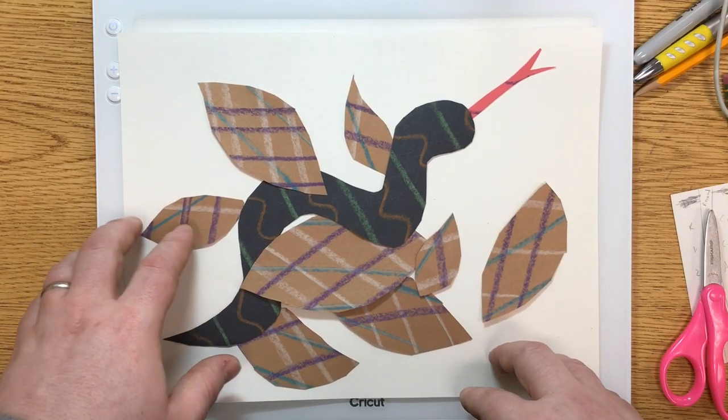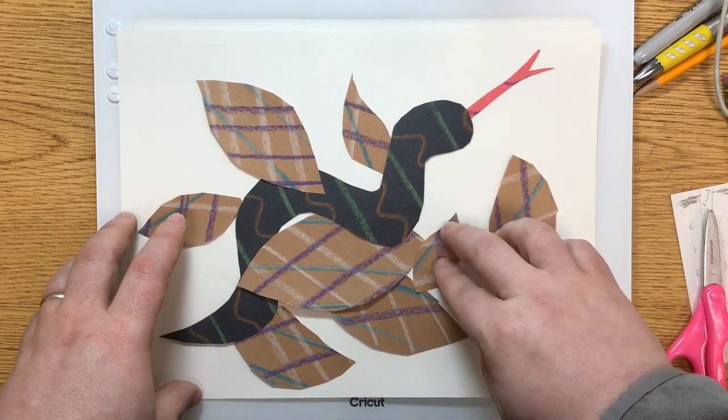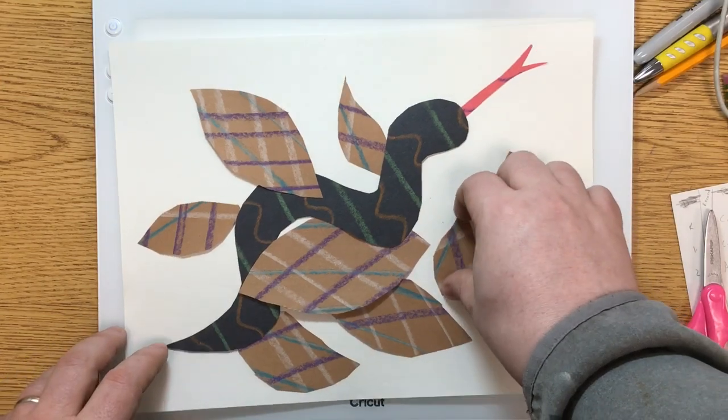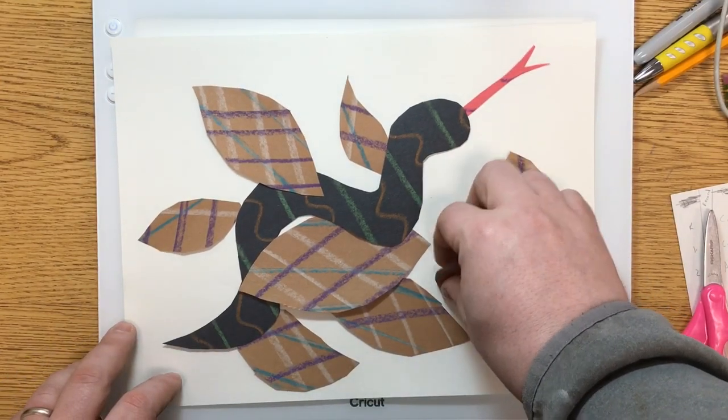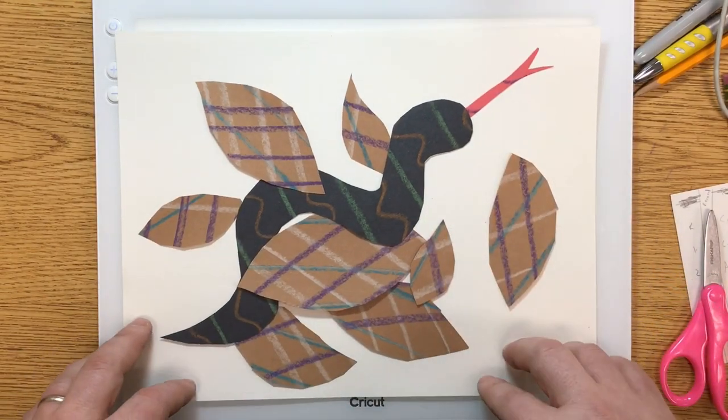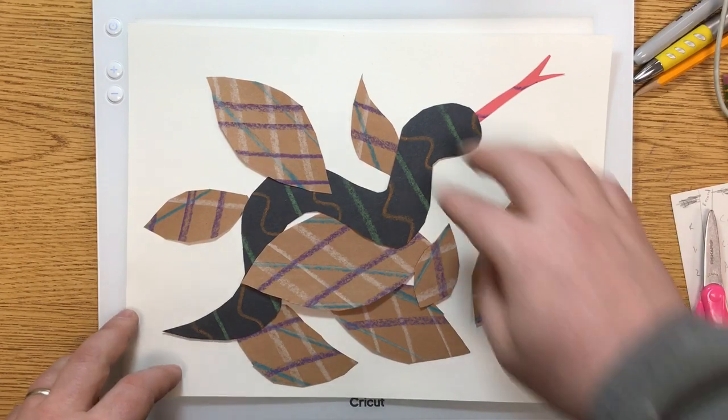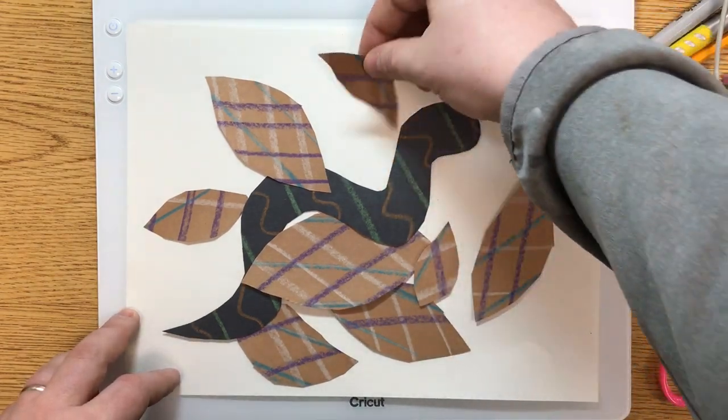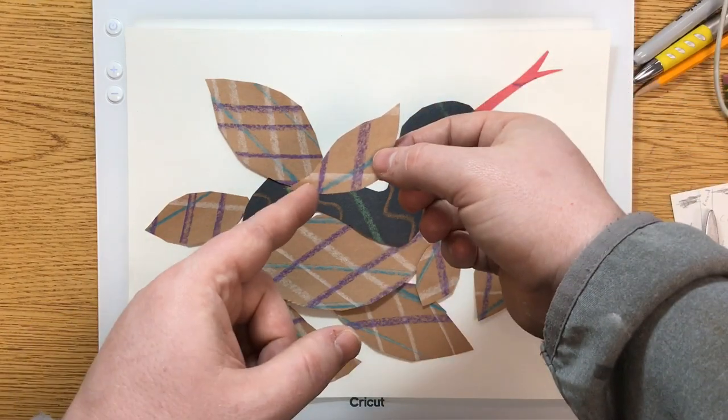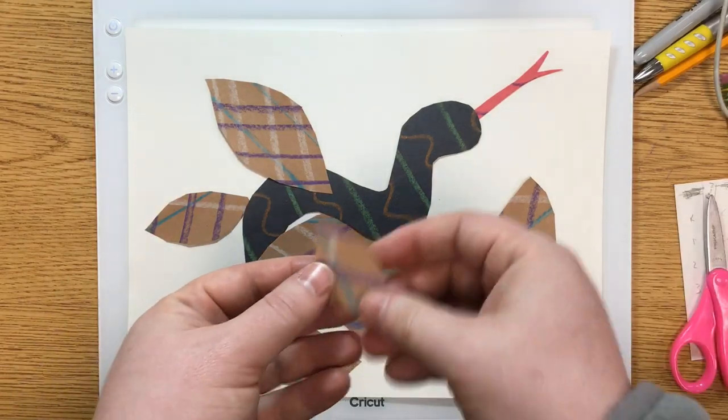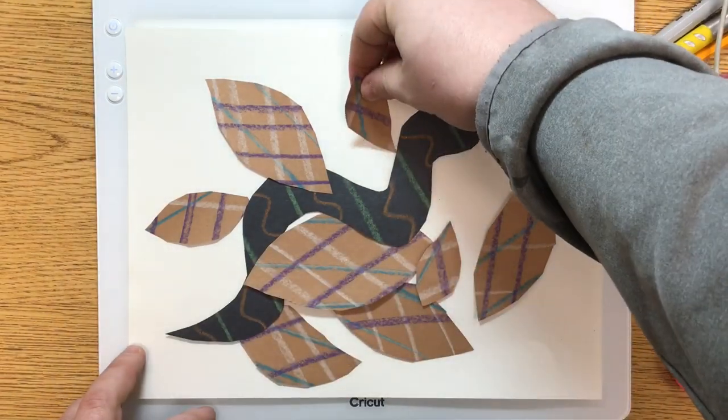But yeah, so just play around until you've got the arrangement that you think is going to be perfect. No, I liked that better when it was overlapping, so I'll put that back. I'm not sure I like this one so much. And I think it might be because of this sharp point. Maybe I'll snip that off. There we go.